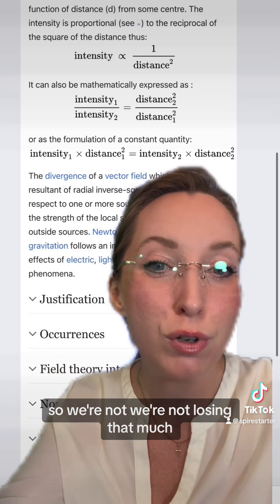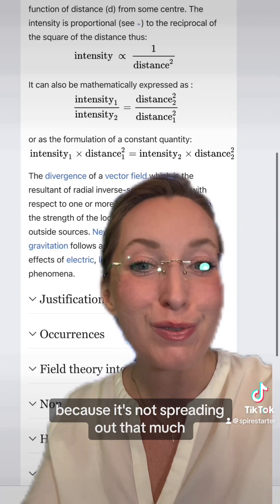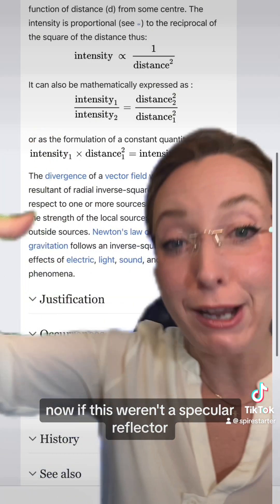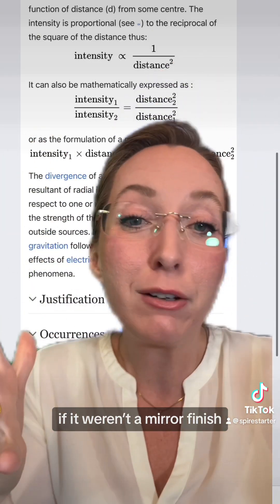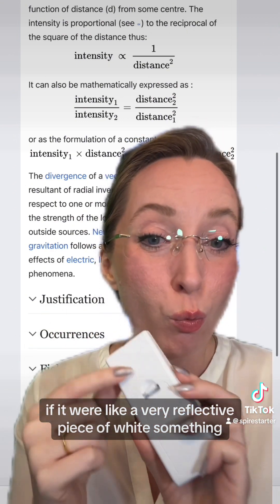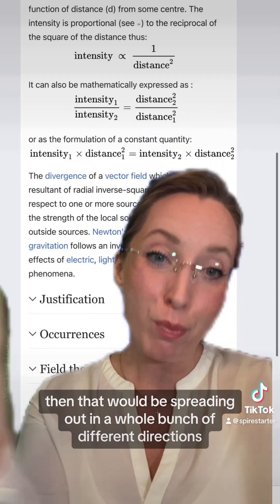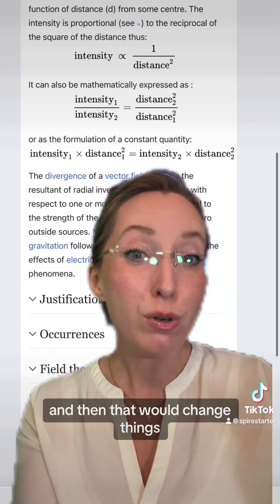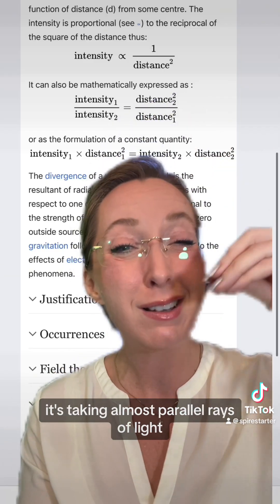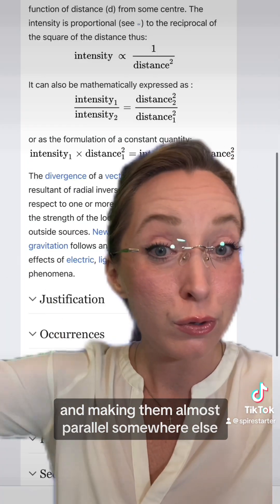So we're not losing that much because it's not spreading out that much. Now, if this weren't a specular reflector, if it were a mirror finish, if it were like a very reflective piece of white something, then that would be spreading out in a whole bunch of different directions. And then that would change things, but that's not what we're talking about here.